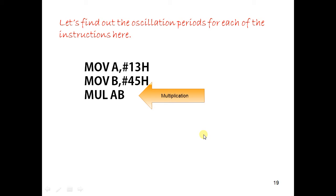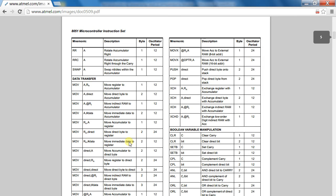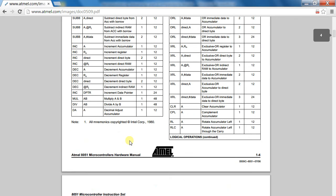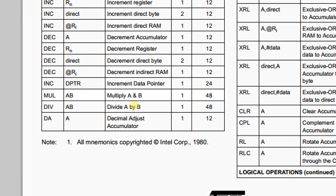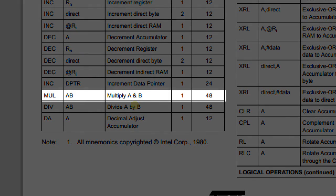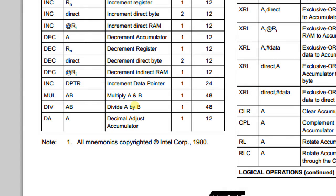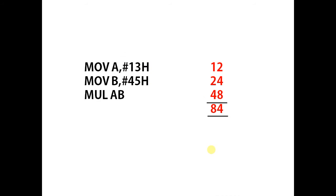The last instruction is the multiplication instruction. This instruction takes 48 oscillation periods. The total oscillation periods required to multiply two numbers is 84.